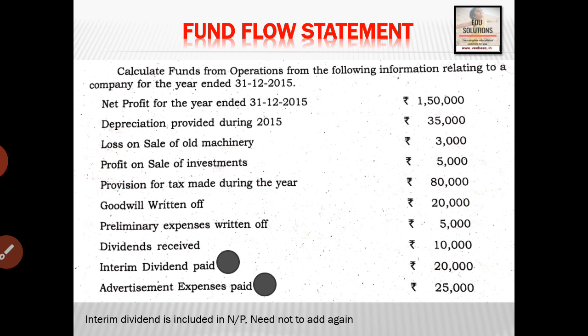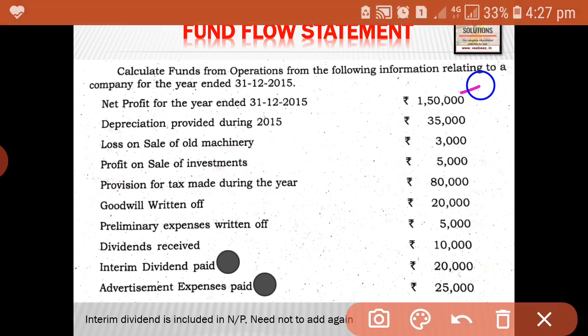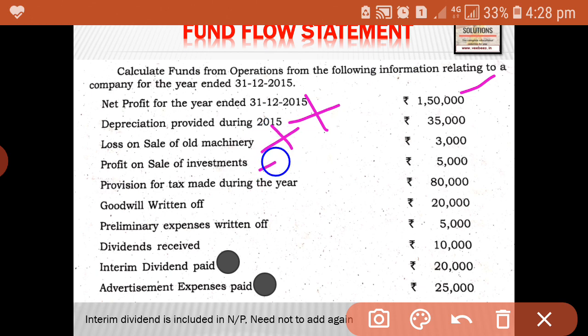How to start with our problem? Firstly, we have to start with our profit. Write down net profit. Then write: add non-fund, non-operating expenses debited. What are the non-fund, non-operating expenses? Depreciation is an example. Loss on sale of machinery is an example — it is to be added. Profit on sale of investment is also a non-operating item, but it is a profit, so it is to be deducted.